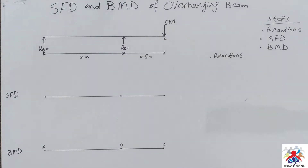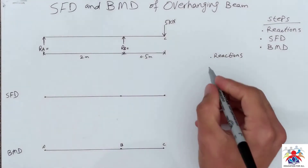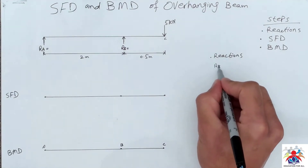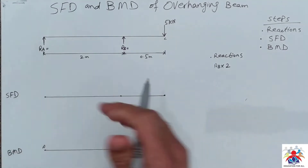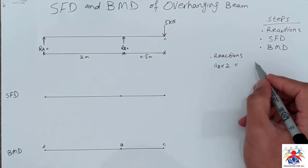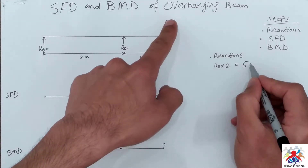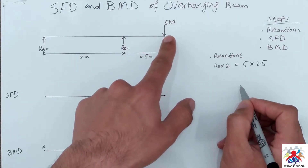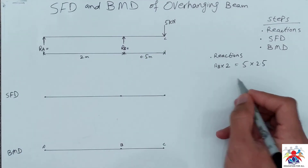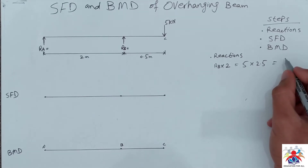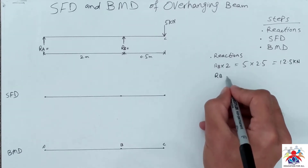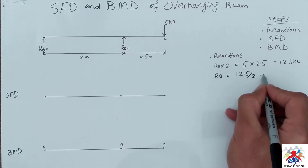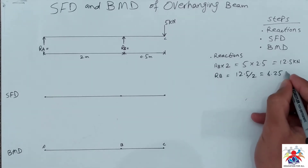First of all, in order to draw the shear force diagram, we have to calculate reactions. We will take the moment at RA but use RB. So RB multiplied by 2 is equal to 5 multiplied by 2.5, since the distance from point C to A is 2.5. That gives us 12.5 kilo-newton. So RB is equal to 12.5 divided by 2, which is equal to 6.25 kilo-newton.